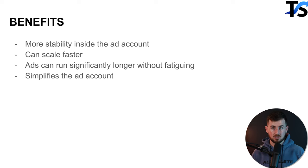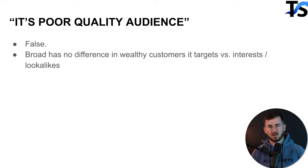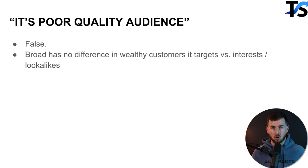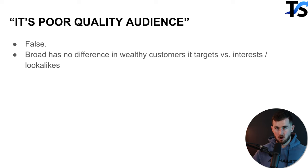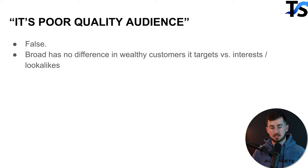Now, broad targeting objections. The most common one: it's a poor quality audience. This is false. Broad targeting isn't showing ads to people who have no clue who you are. It's showing ads to people most likely to convert based on what you're optimizing for. If you optimize for purchases, you get purchases. If for leads, you get leads. There's no difference in audience quality or the wealth status of customers. It simply removes restrictions so Facebook can target people most likely to convert.